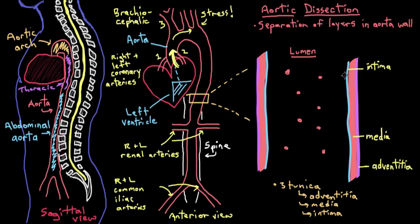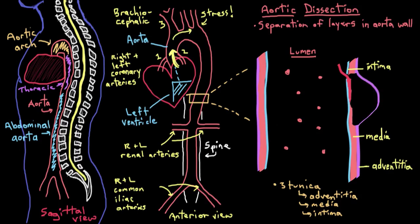An aortic dissection is when you get a tear in the intima and blood enters the layer between the intima and the media. That blood will continue to shear away the connection between the intima and the media — with each heartbeat, blood jets through this tear and causes even more tearing. It's sort of like when you're peeling a hard-boiled egg and you get through that little membrane under the shell — after that membrane gets broken, you can easily peel off the rest of the eggshell. As more and more blood enters the plane between the intima and the media, this dissection just keeps getting bigger and wider.